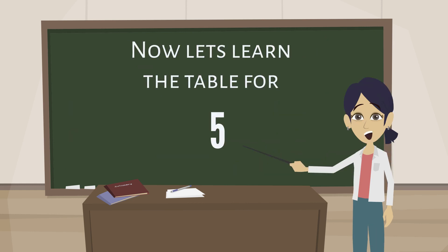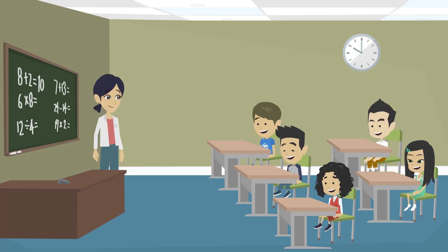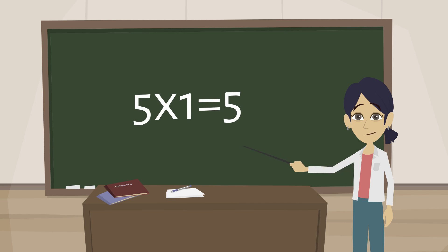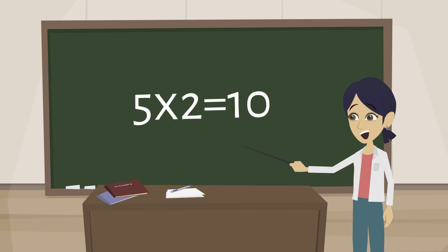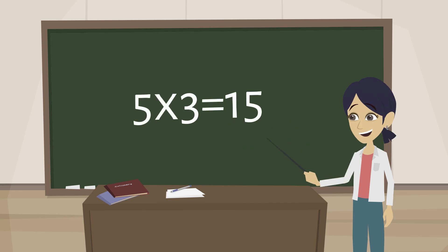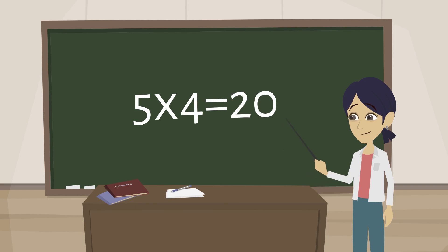Now let's learn the table for 5. 5 1s are 5, 5 2s are 10, 5 3s are 15, 5 4s are 20,